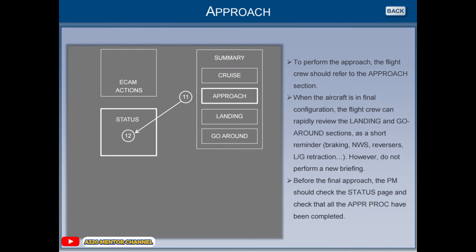To perform the approach, the flight crew should refer to the approach section. When the aircraft is in final configuration, the flight crew can rapidly review the landing and go-around sections as a short reminder: braking, nose-wheel steering, reversers, landing gear retraction.